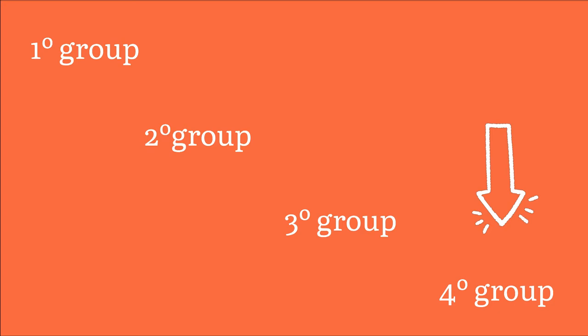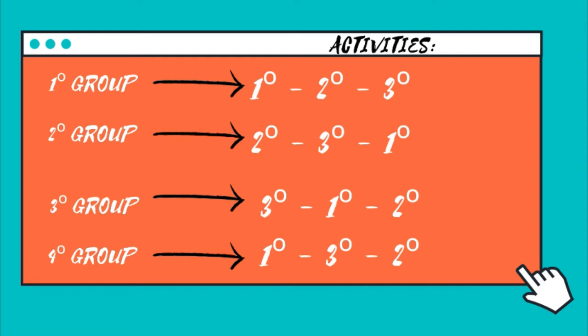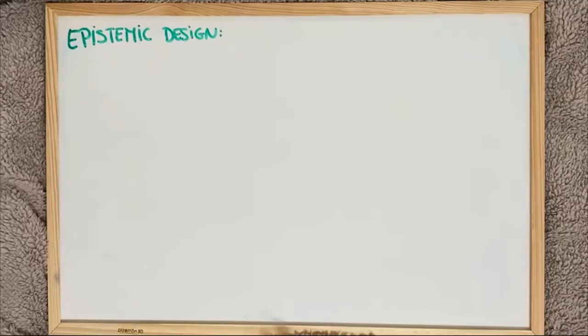Each group will start with a different activity so that group 4, which will need the most scaffolding, will do activity 1 at the same time as group 1, activity 3 at the same time as group 2 and the same with activity 2. So there will only be two groups doing the same activity at the same time. In this way, group 4 will always have a reference group to help each other.